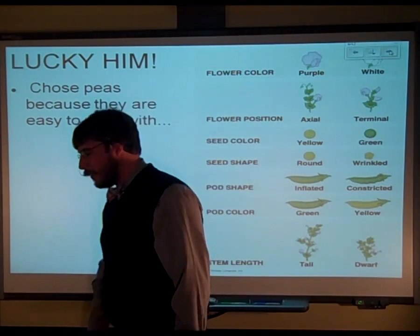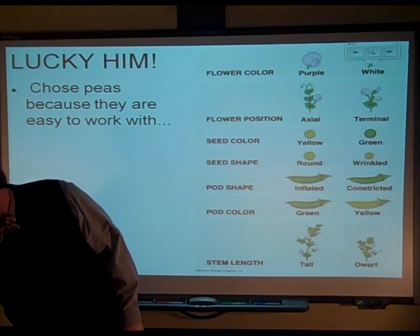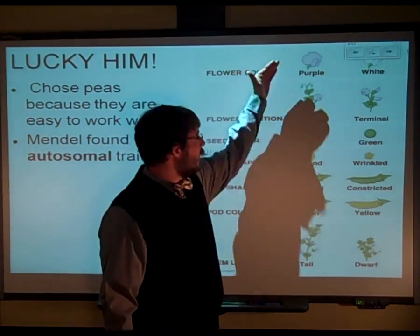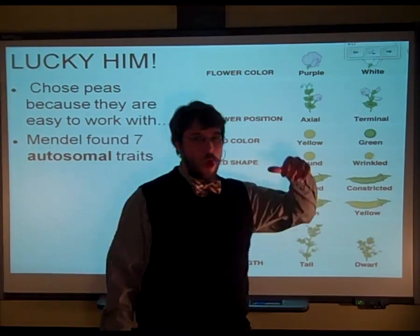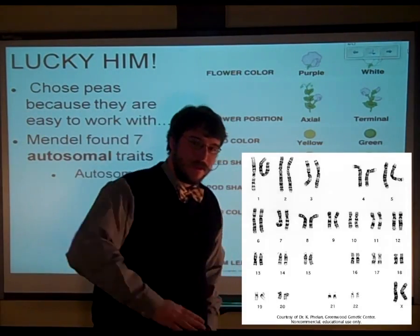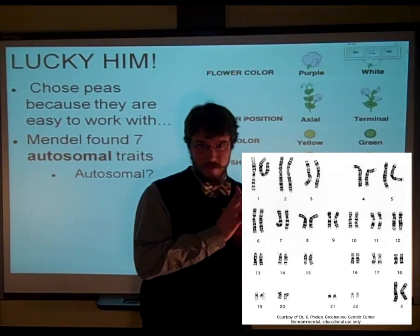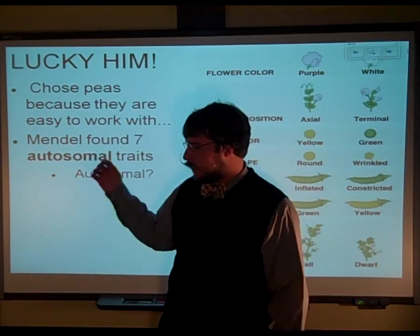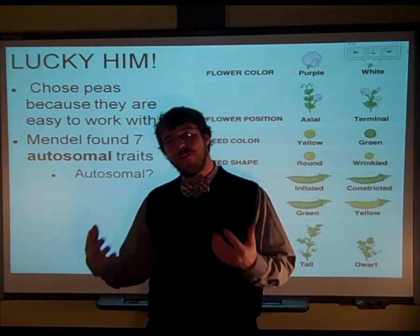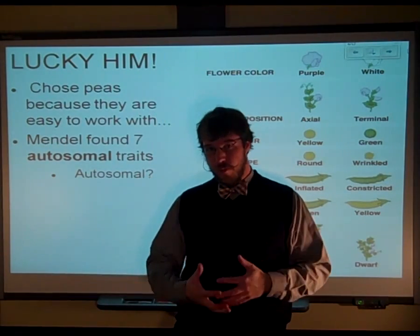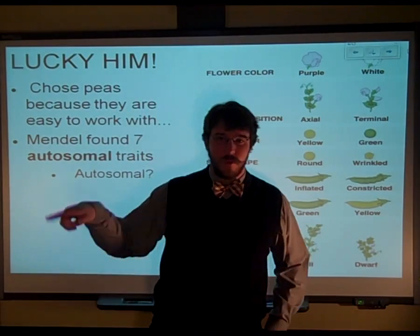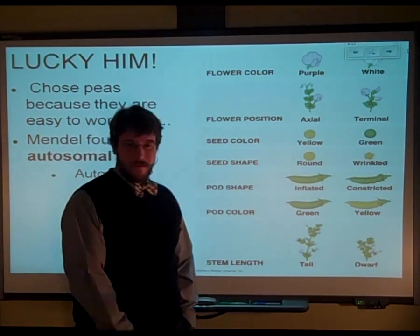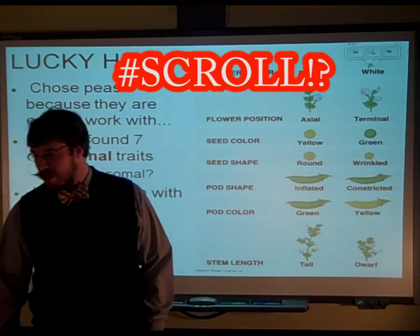He was pretty lucky because the plants that he decided to work with actually all had very easy-to-measure traits. They had seven traits — here they are — and they're all autosomal traits. So remember when we did the karyotype, you talked about autosomes versus the sex chromosomes. Autosomal traits are the ones found on those regular chromosomes. For us, that's those 22 other than the sex pairs. For the pea plants, I have no idea how many chromosomes they have — Google it.